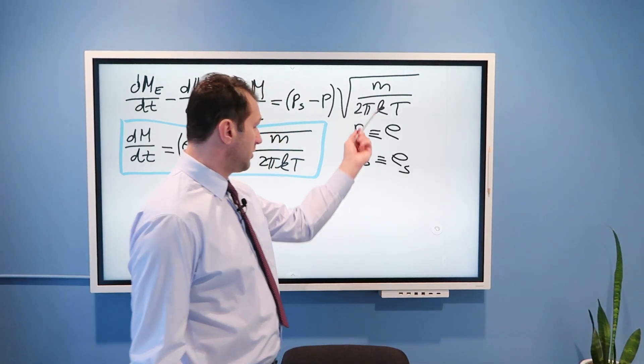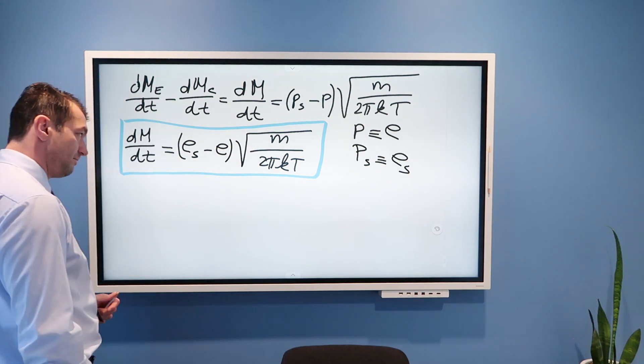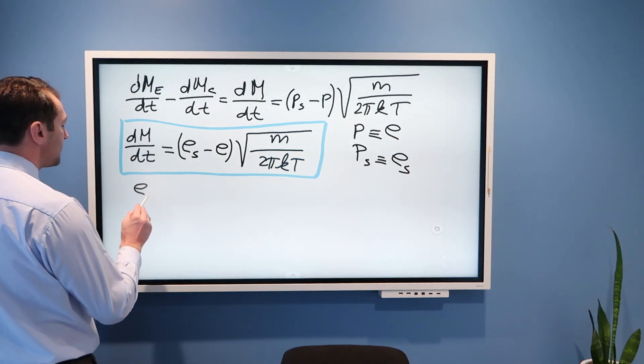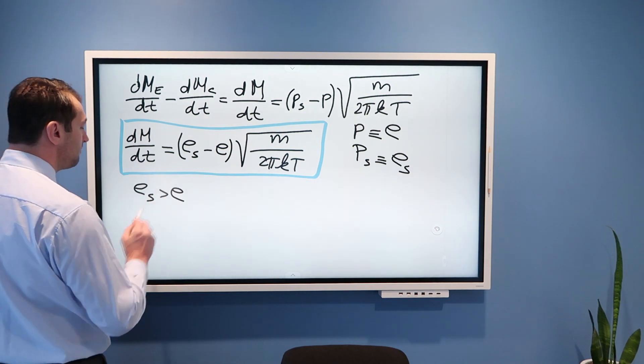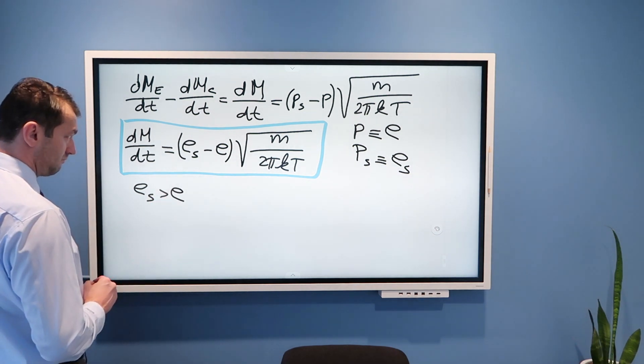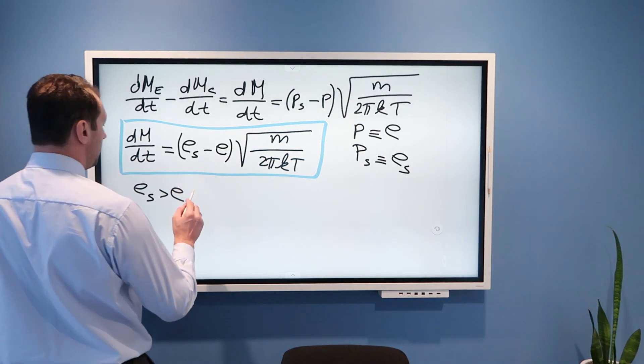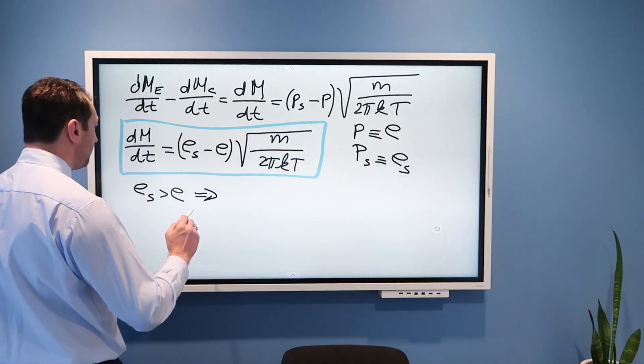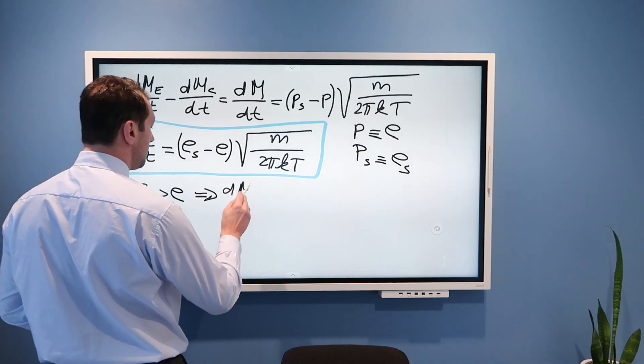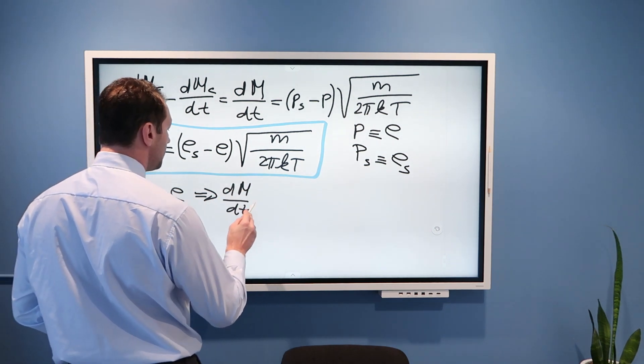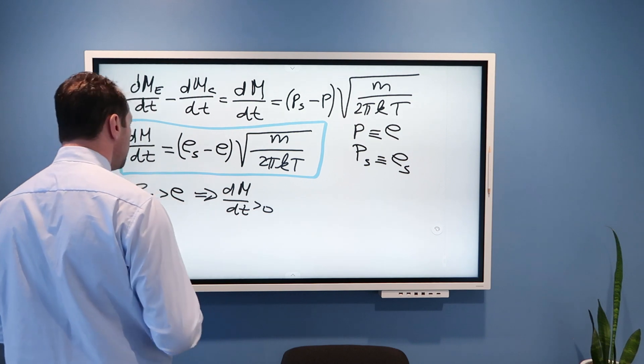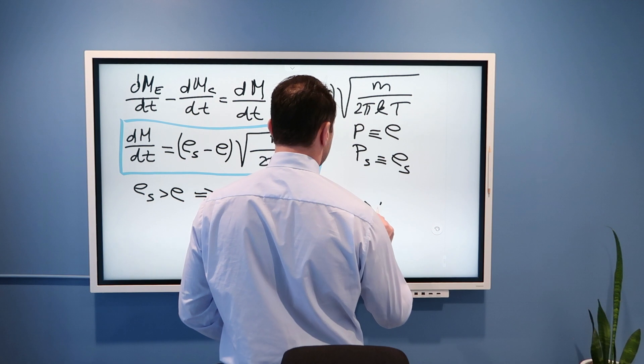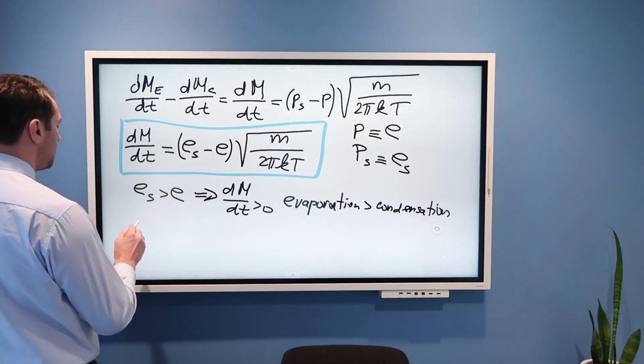Of course, if you didn't watch my video on collision frequency between atoms or molecules and a wall, then you don't understand anything, but you can watch that video where I derived this formula explicitly. We can see if ES is larger than E,